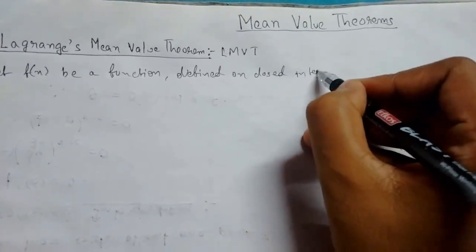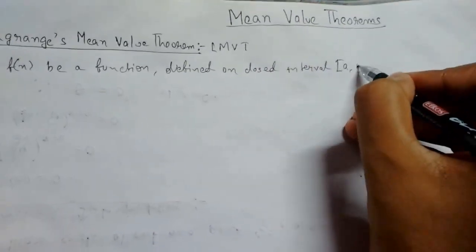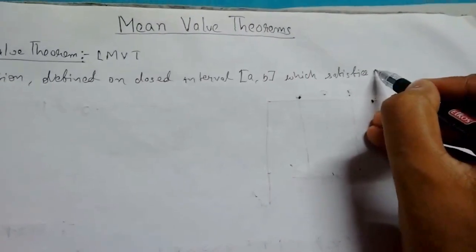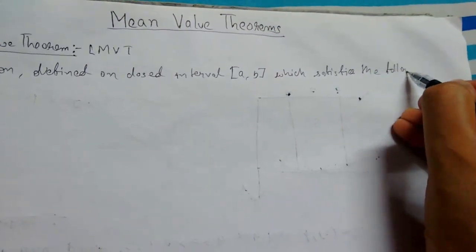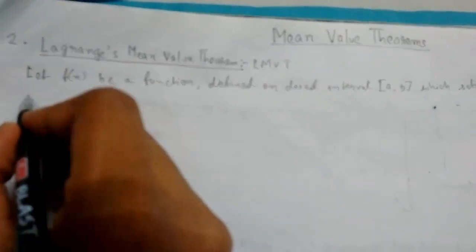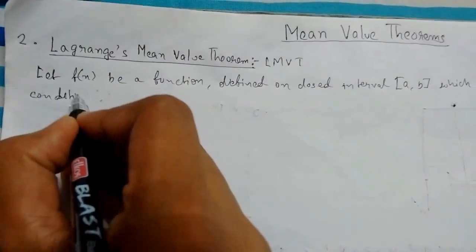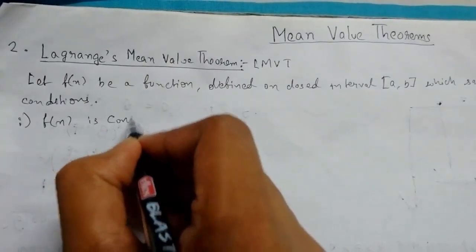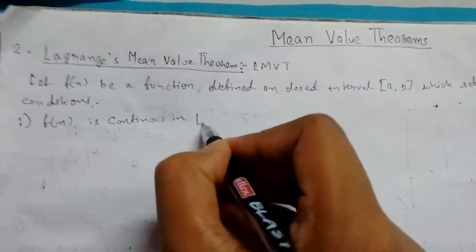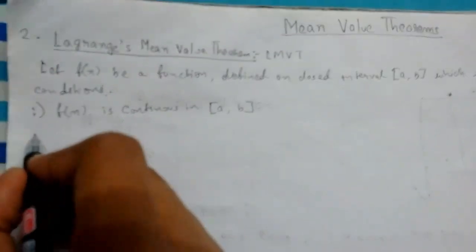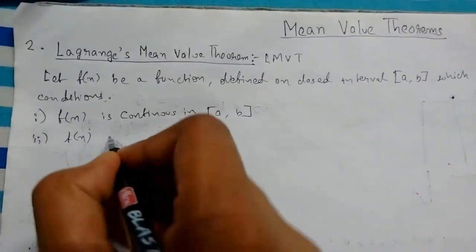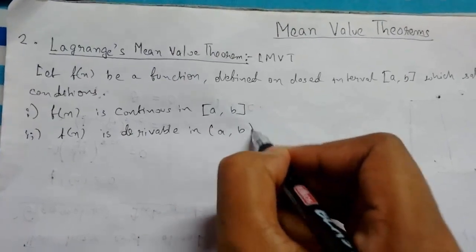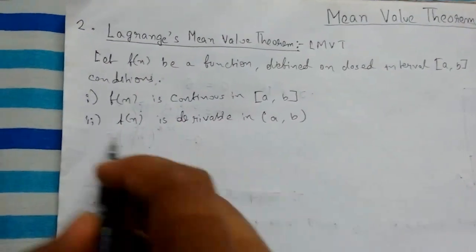which satisfies the following conditions: Condition number one, f(x) is continuous in closed interval [a, b]. And f(x) is derivable in open interval (a, b). So it must satisfy these two basic conditions.